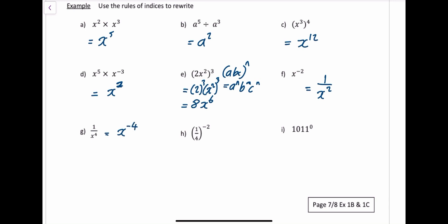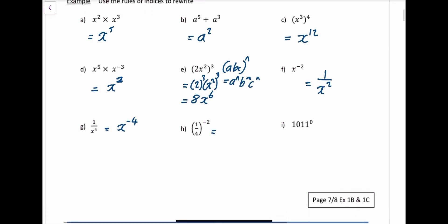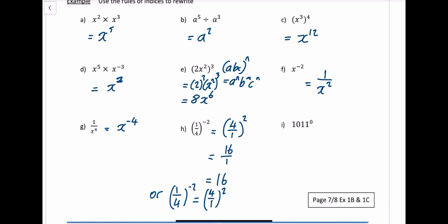For a fraction to the negative power, you just flip it upside down. So it becomes 4 over 1, and then square it. Square the top line gives 16, square the bottom gives 1, so the answer is just 16. Alternatively, 1 over 4 to the minus 2 is the same as 4 over 1 squared, which is 4 squared, which is again 16. And the last one: anything to the power of 0 is just 1.